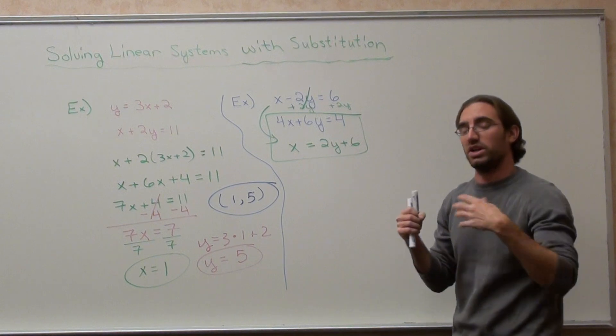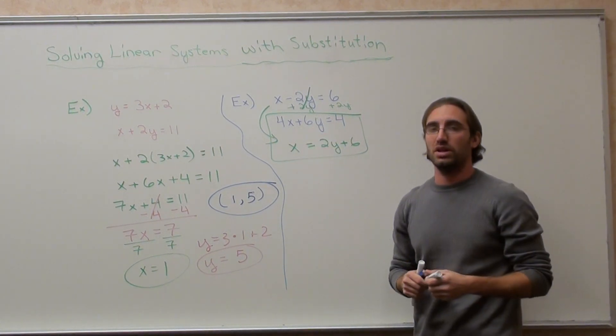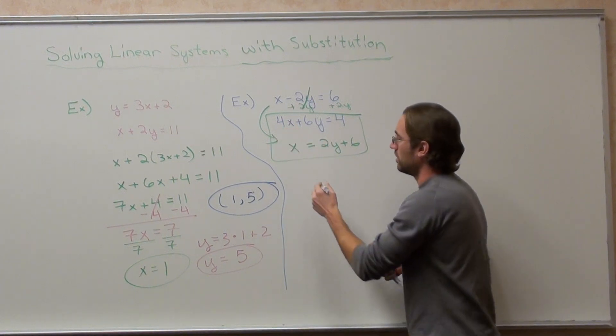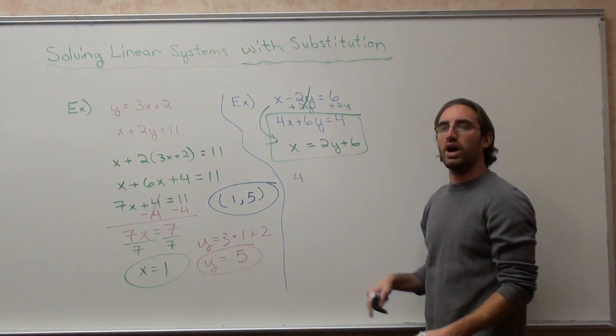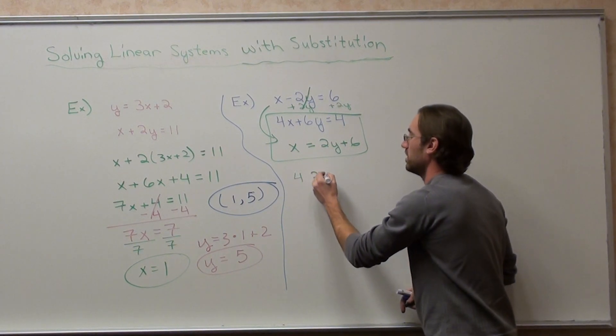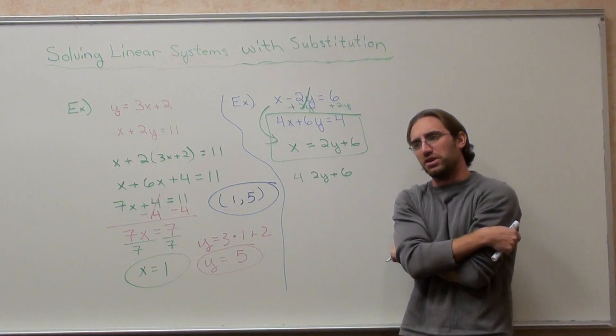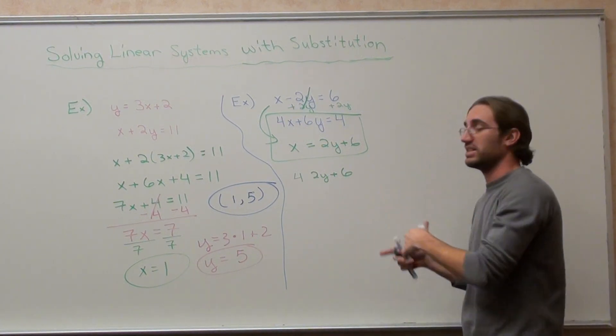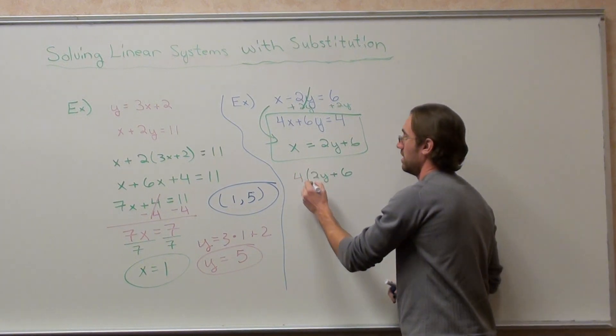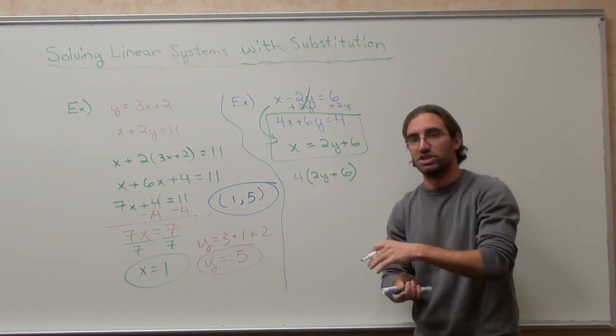Now what I want to do is I want to substitute into the nasty-looking equation. So I've got 4 times x, but x is actually 2y plus 6. So I've got 2y plus 6. Here's where I wait for my students to say something. I've got to just tap my foot. It's a parenthesis, Mr. Schott. I'm like, yes. You've got to put the parenthesis.